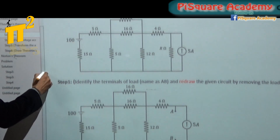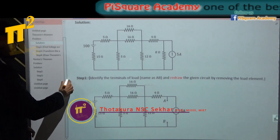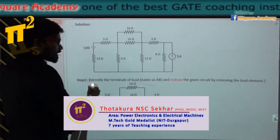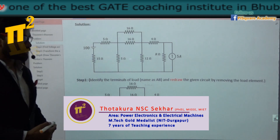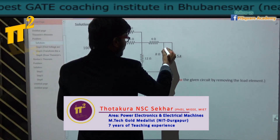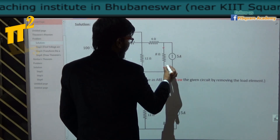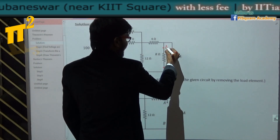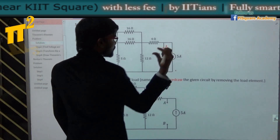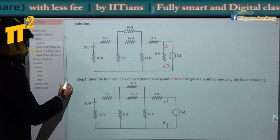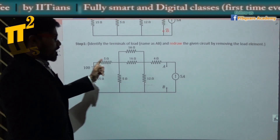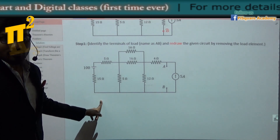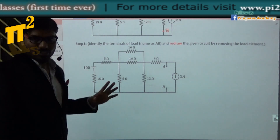Let's follow the steps. In step 1, we redraw the network by identifying the load terminals. We identify the load, name the terminals A and B, remove the load element, and redraw. All of you must redraw it, otherwise you will be confused. First step is done.